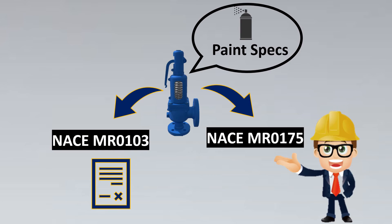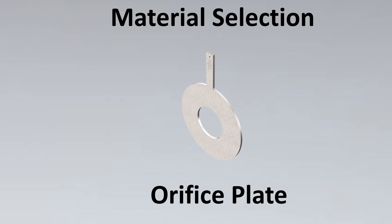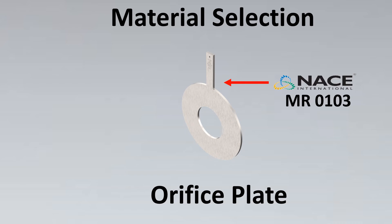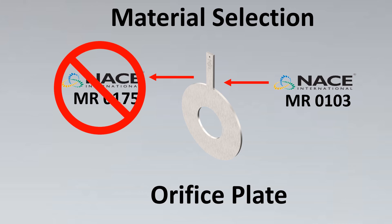Taking the initial example of paint specifications: if the relief valve is specified for NACE MR0175, meaning it can handle the harsher offshore environment, then we can accept NACE MR0175 in place of MR0103 for paint specifications and other simple general items. However, note that if we are dealing with more important considerations like material selection and our requirement is NACE MR0103, but the vendor is providing MR0175, we should not blindly accept this.